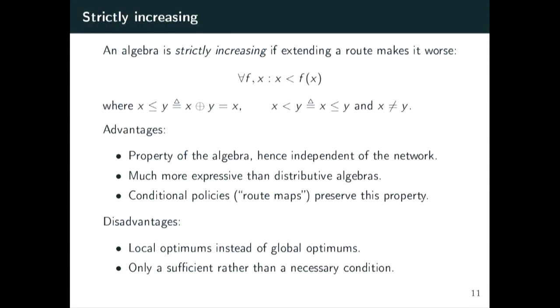We then come to the Goldilocks condition: strict increasingness. An algebra is strictly increasing if extending a route only makes it worse—if you have route x and take f(x), then f(x) must be strictly worse than x, where this ordering is defined using the '+' operator: x is less than y if choosing between x and y returns x. The advantages: it is a property of the algebra, independent of network topology, so we only need to verify it once when we design the protocol and it automatically works for all networks. It is also much more expressive than distributive algebras—you're not enforcing a common preference order across all nodes, only that extending a route makes it worse. Furthermore, conditional policies such as route maps preserve this property: if you have two strictly increasing policies applied conditionally, the result is still strictly increasing.